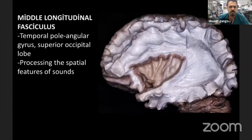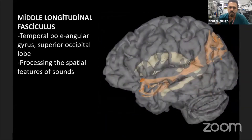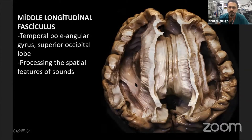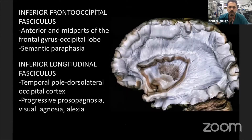The next fiber bundle connects the superior temporal gyrus to the angular gyrus — the middle longitudinal fasciculus. You can see its relationship with the ventricle, including the atrium and temporal horn, and its cortical relationships with the superior temporal gyrus and angular gyrus. From the superior view, you can also see the middle longitudinal fasciculus and its relationship to the ventricle.